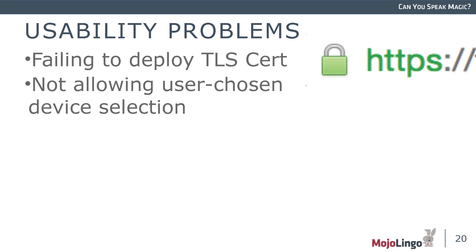Another one is not allowing the user to choose their device. One of my coworkers has a dual monitor setup, and the camera built into one monitor is on one side while the camera he actually uses is on the other side. When we were building an app one day, we realized we were always looking at the side of his face when he started, and he didn't have a way to change the camera. It's a subtle thing — it won't affect all users — but just be considerate. Some people really do need to change devices, whether it's audio or video.